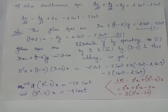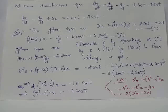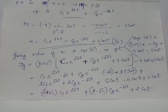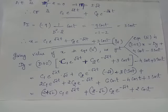This differential equation involves the single dependent variable x. To solve it, we form the auxiliary equation m² - 2 = 0, giving m = ±√2 as the roots. Therefore, the complementary function is C₁e^(√2·t) + C₂e^(-√2·t).